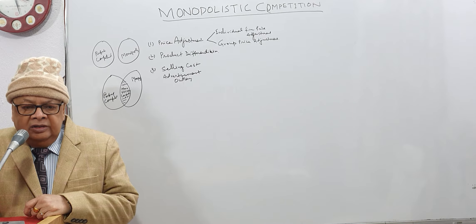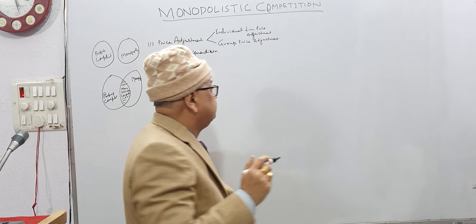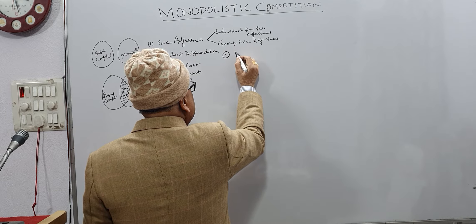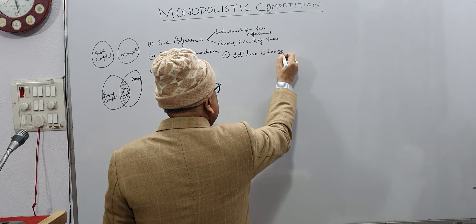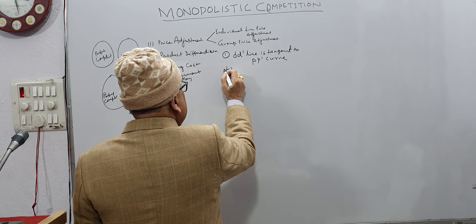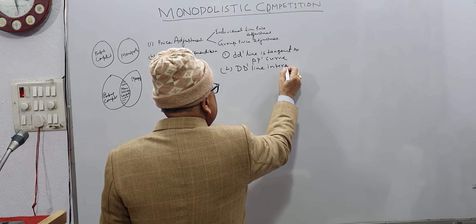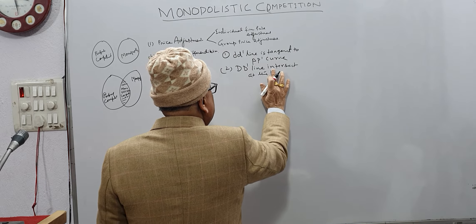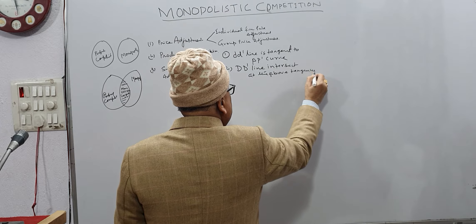Today we are discussing Group Equilibrium. Condition 1: the small D' dash line is tangent to PP' dash, and the capital D' dash line intersects at the tangency point.